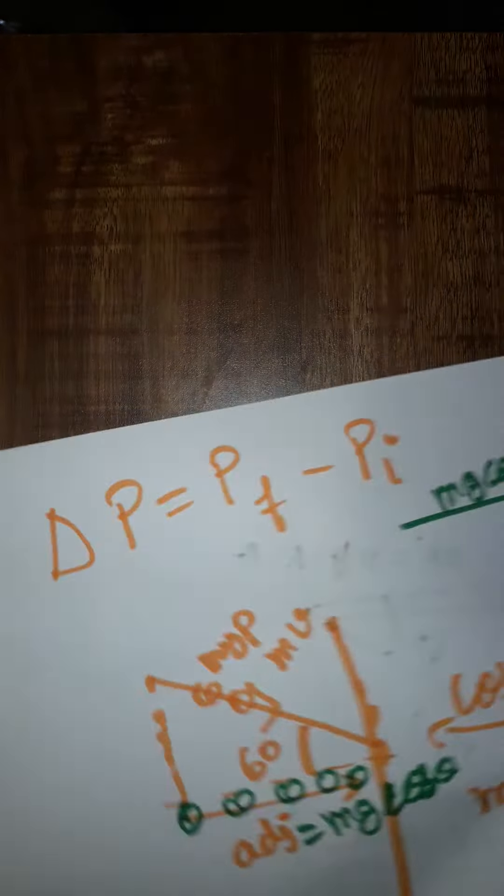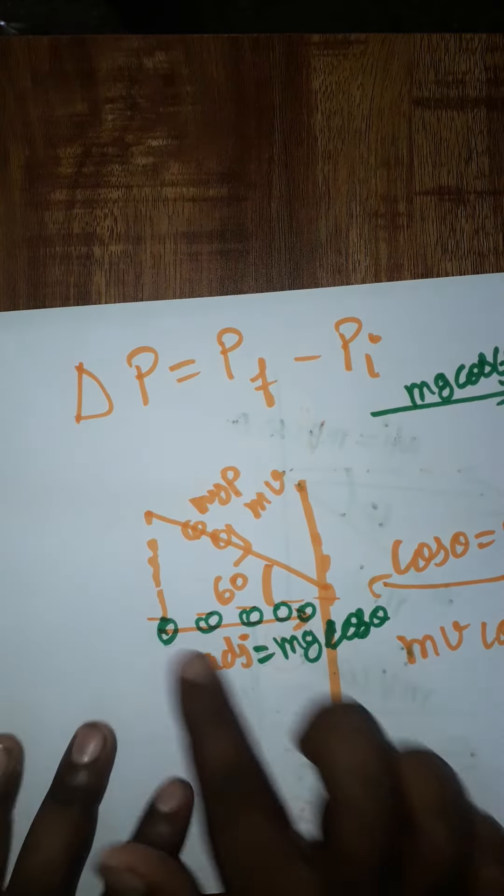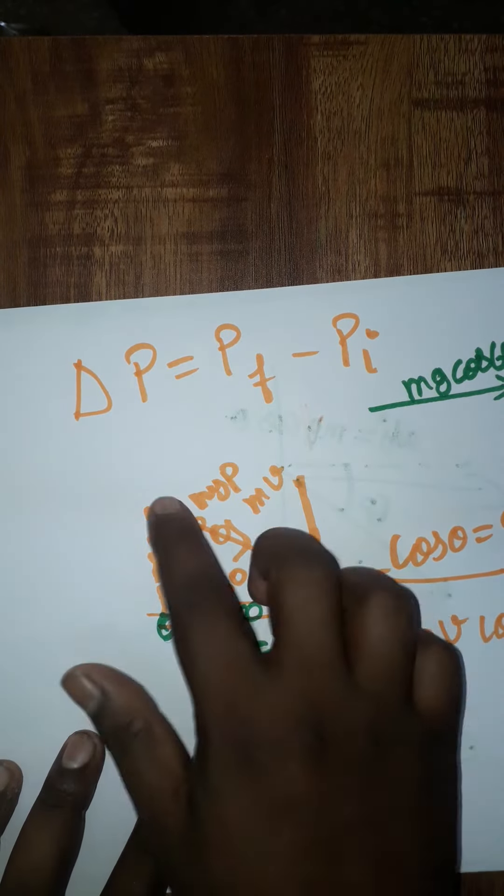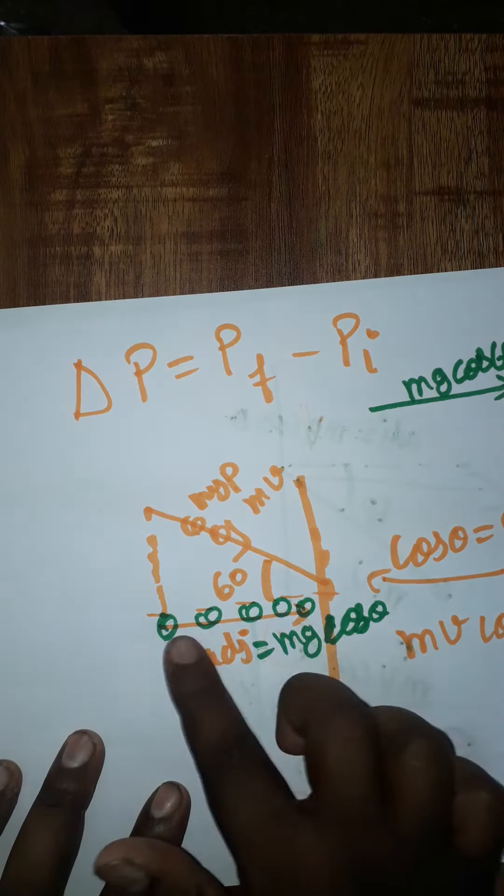So the ball is going to incident at 60 degrees. I want only the horizontal side, I don't want the angle. So I am taking the horizontal side which is going to be the adjacent side of the triangle. That's going to be mv cos θ.